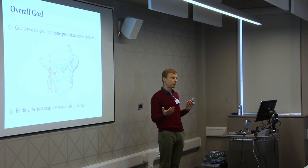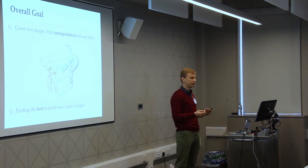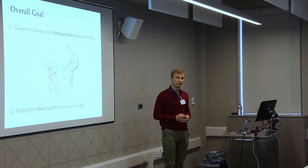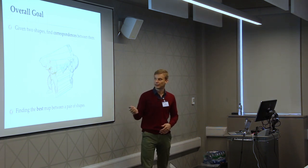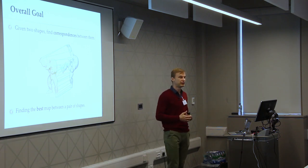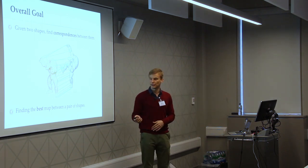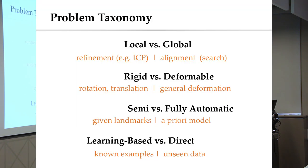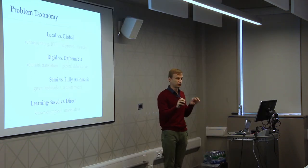There are two goals when looking at this problem. The first is to purely formulate it, either on paper or as an energy, describing what you mean by the best correspondence when looking for a map between two shapes. The second is to create an efficient algorithm to find the correspondence in practice. This problem is very old and has come up in many different settings.